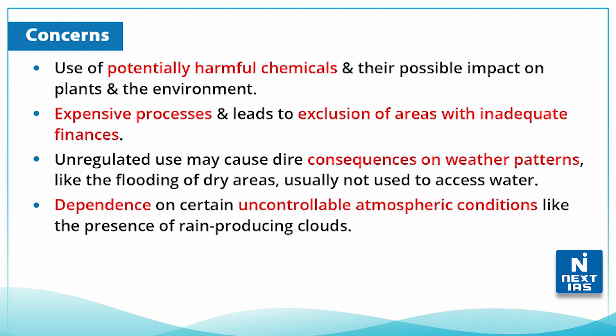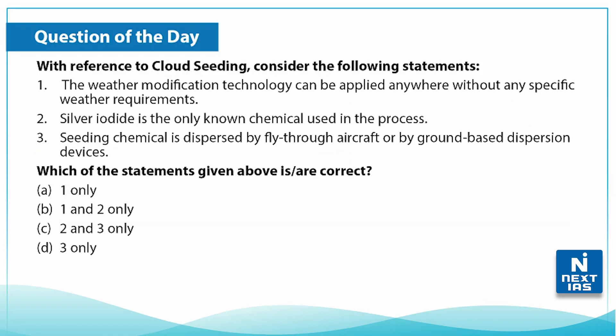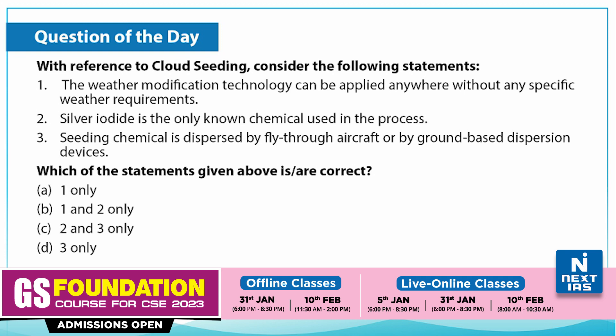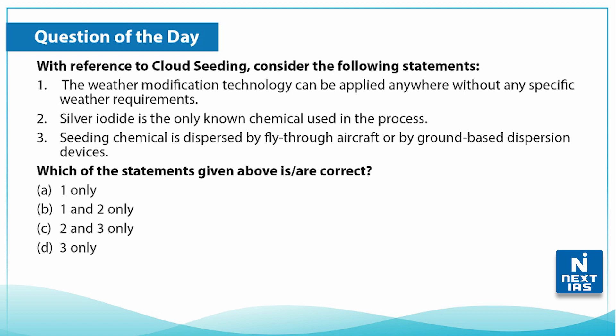Now let us take up a practice question on this topic. With reference to cloud seeding, consider the following statements: First, the weather modification technology can be used anywhere without any specific weather requirements. Second, silver iodide is the only known chemical used in the process. Third, seeding chemical is dispersed by fly-through aircraft or by ground-based dispersion devices. Choose the correct option and write your answers in the comment section below.